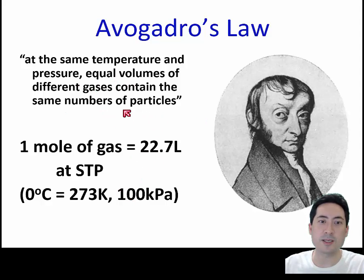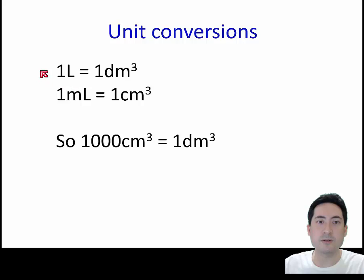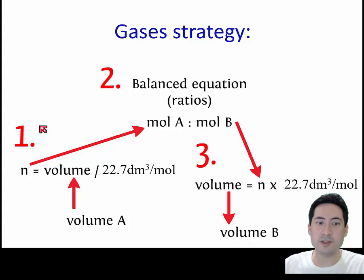At the same temperature and pressure, equal volumes of gases contain the same number of particles. So 1 mole of gas gives us 22.7 liters. Make sure you know these well. A mL is the same as a centimeter cubed, which would be the same as one gram per liter for thermochemistry. One liter is one decimeter cubed. A thousand centimeter cubed is a decimeter cubed.